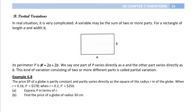Variations, Part 4. In this video, I will introduce the last type of variation which is called partial variations. Let's see this example. The perimeter of a rectangle: if P is the perimeter of the rectangle, which is equal to the length plus the width times 2. Expanded, this is P equals 2a plus 2b. That means P is a variable that may be the sum of more than one part — one depending on a and the second part depending on b. So in this example, we will call this partial variations.